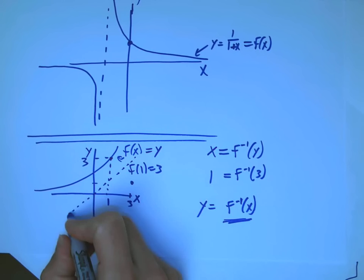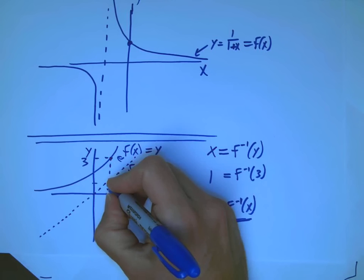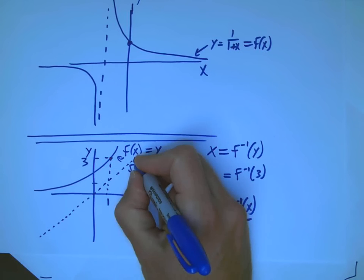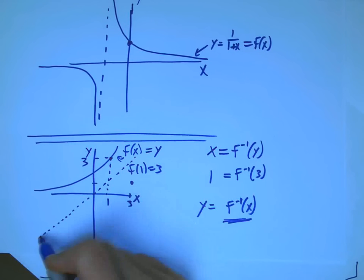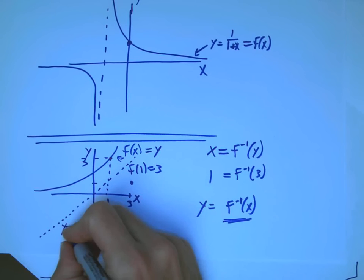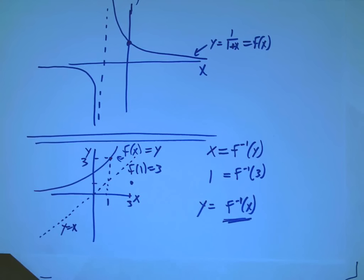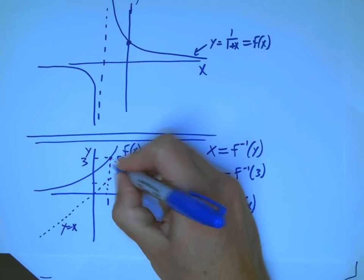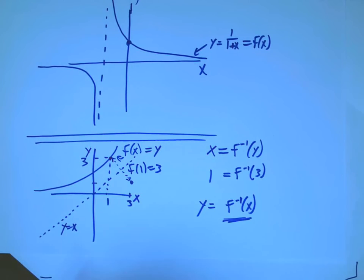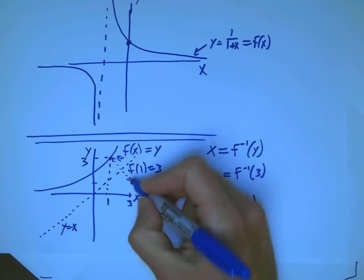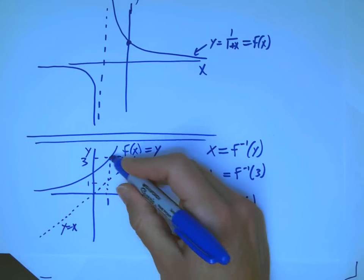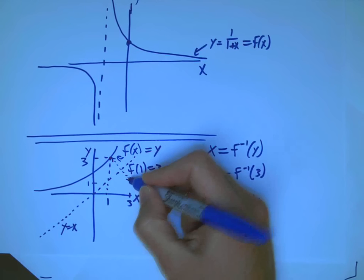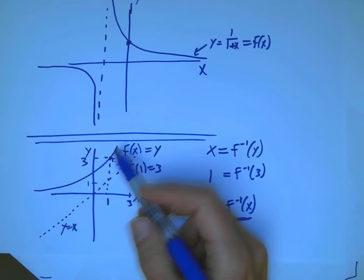There's certain points that won't get moved at all. When I switch x with y, if I happen to be the point 1, 1, or 2, 2, or 3, 3, those wouldn't get moved. And so, this dotted line, y equals x, is not going to get moved at all. But everything else is going to get flipped right across that line. 1, 3 goes to 3, 1. That is going to be exactly a flip across the line y equals x.